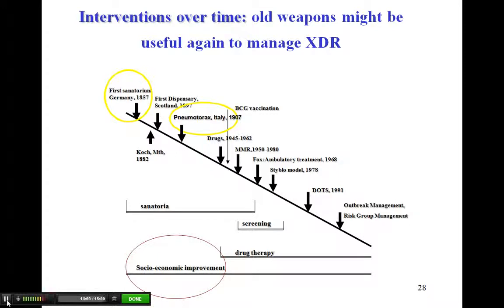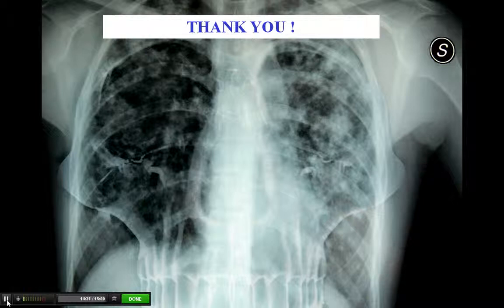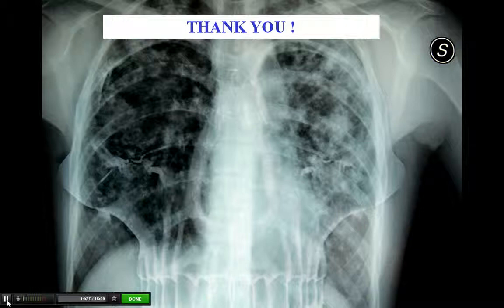This slide represents the decline of tuberculosis and the history of interventions — from isolation sanatoria, the use of dispensaries, the introduction of artificial thorax in 1907, the introduction of drugs, BCG vaccination, mass miniature X-ray, and then the introduction of the DOTS strategy and the modern approach through case management and risk management. The period of sanatoria is over; the period of mass screening is over; we now have drug treatment, with socio-economic conditions still driving improvement. This is just to remind us that TB is a killing disease, and we must remember what we have to do for the sake of our patients. Thank you for listening.